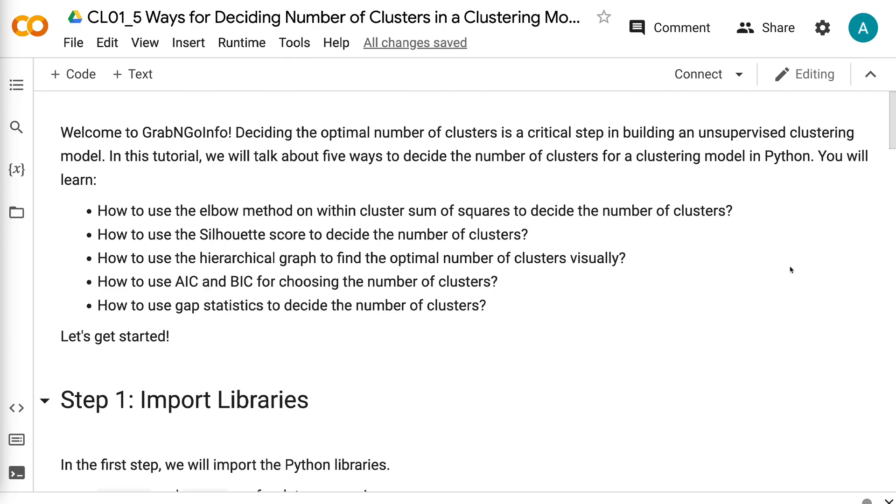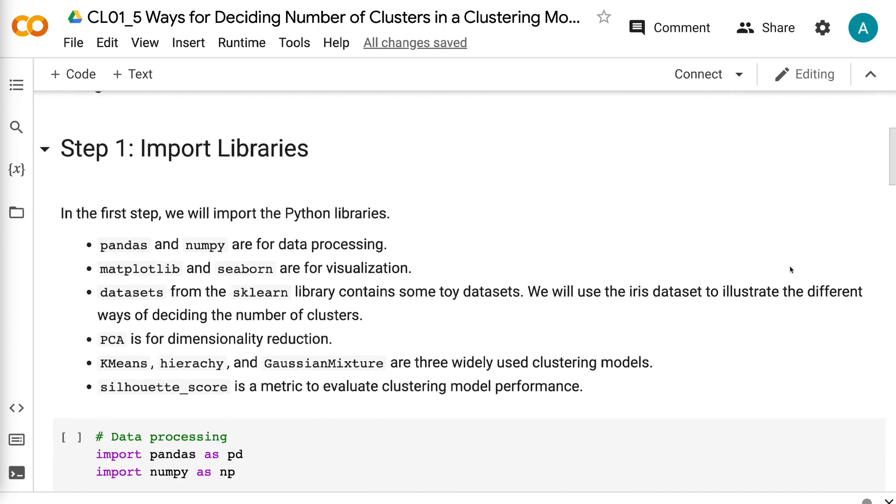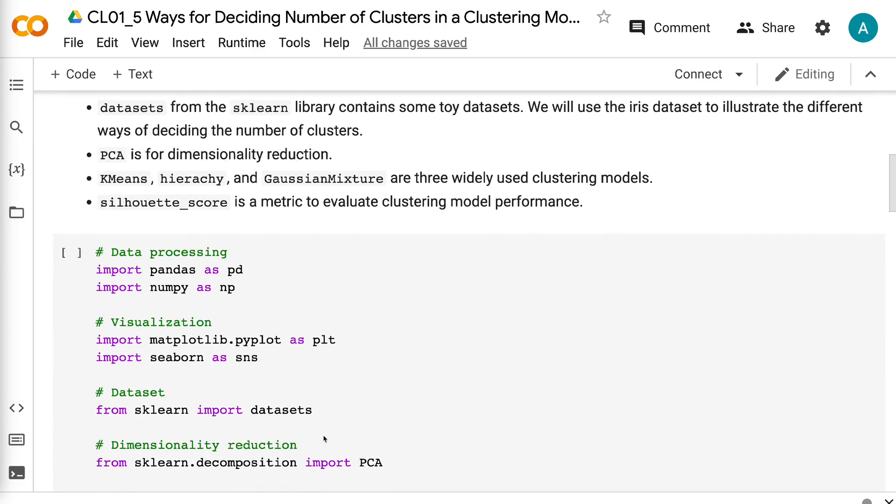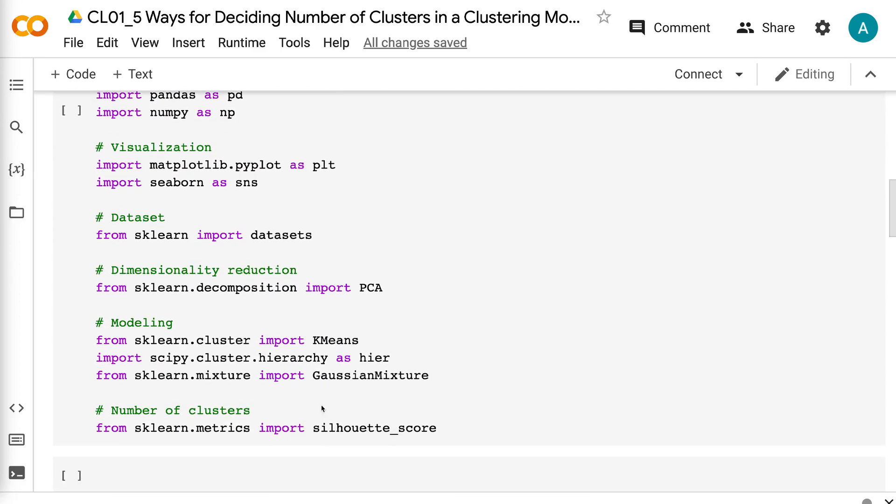In the first step, we will import the Python libraries. Pandas and NumPy are for data processing. Matplotlib and Seaborn are for visualization. Datasets from the sklearn library contain some toy datasets. We will use the Iris dataset to illustrate the different ways of deciding the number of clusters. PCA is for dimensionality reduction.